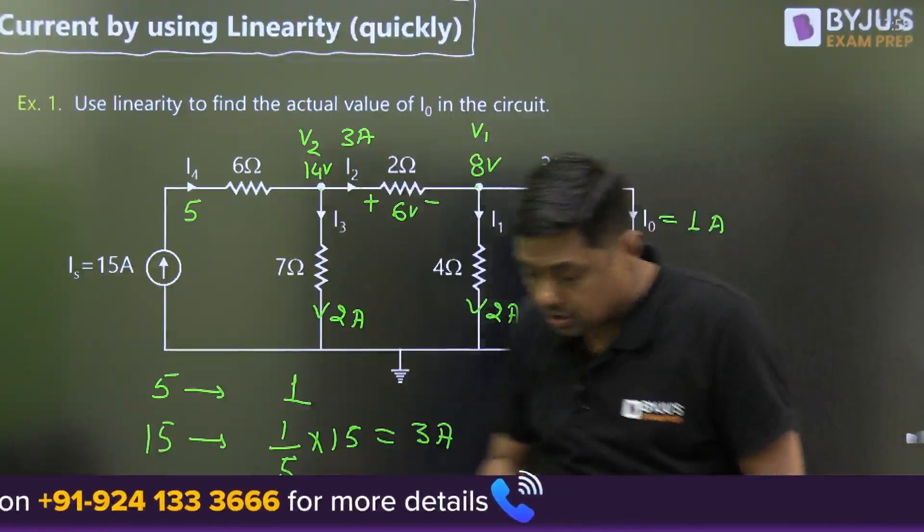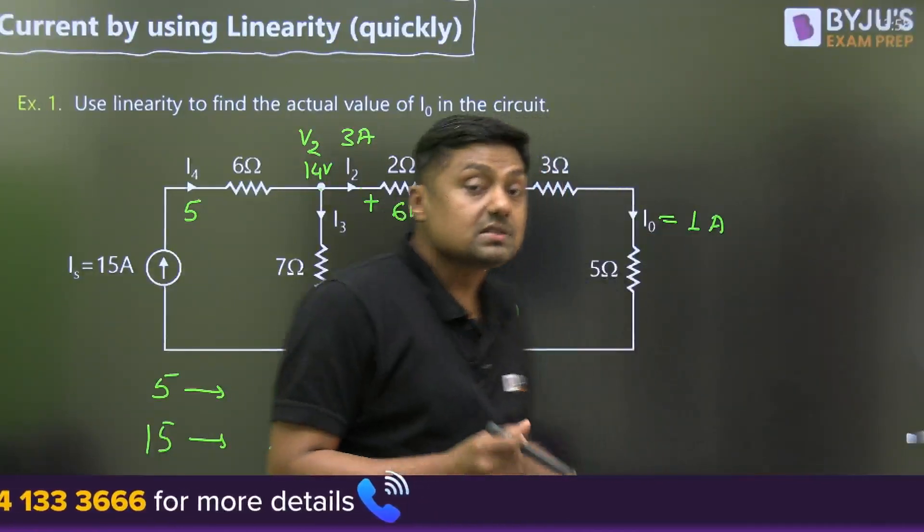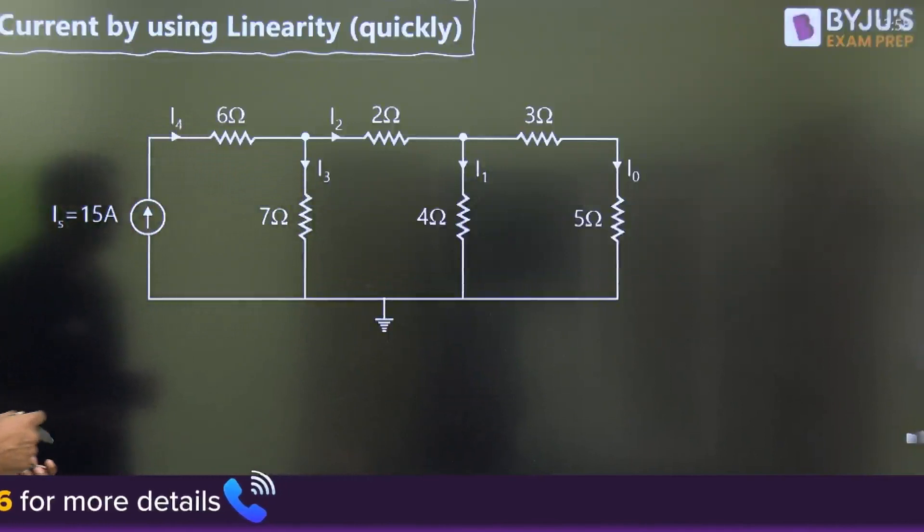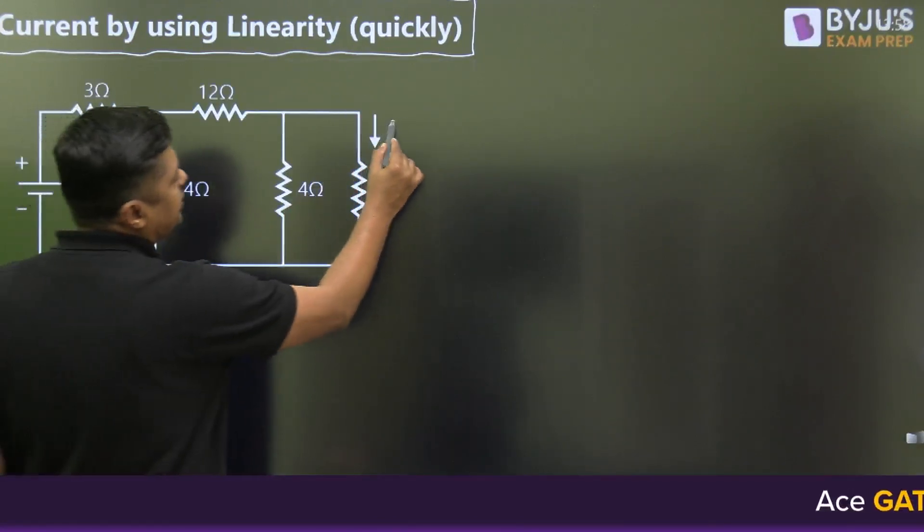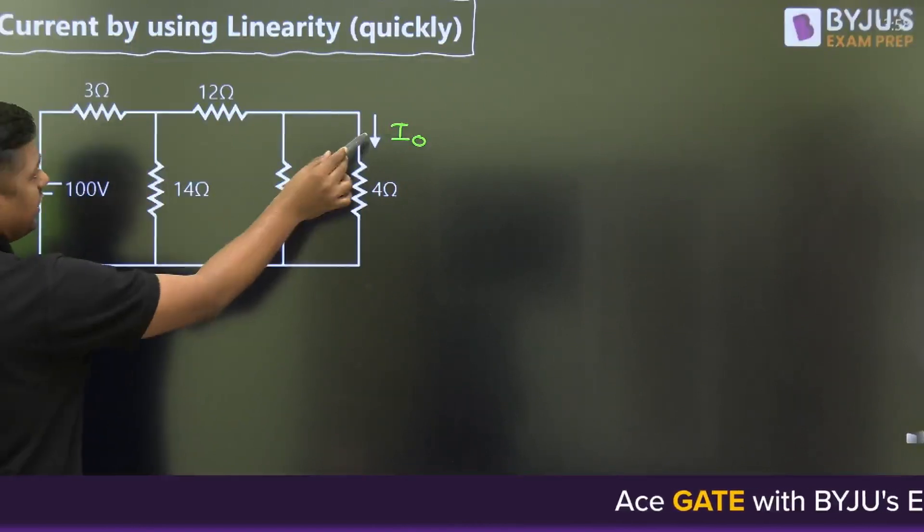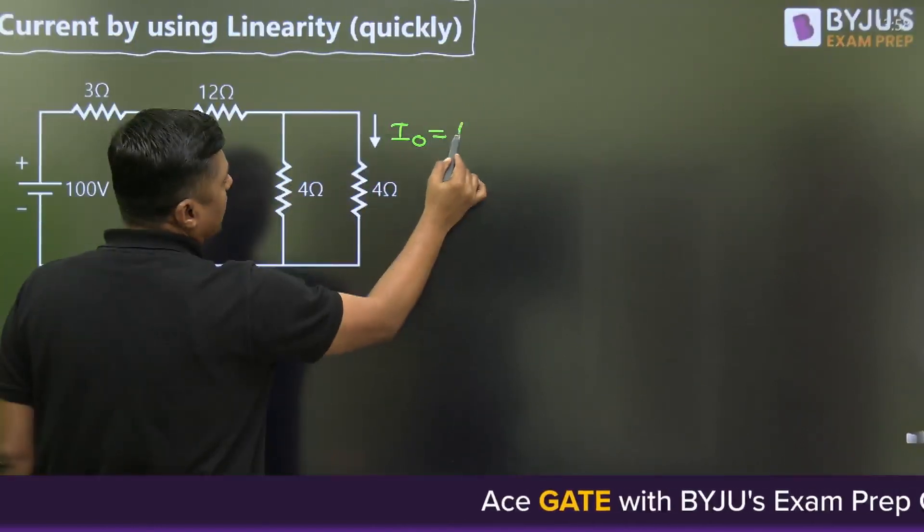Second question: use linearity to find the actual value of I₀ in the circuit. We will use the same concept here. Let this be I₀. 4 times - we can assume it is 1 ampere.